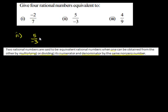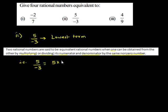So here we have 5 upon negative 3. This is in its lowest term, that is 5 upon negative 3 can be written as 5 multiplied by 1 upon negative 3 multiplied by 1. Therefore, equivalent numbers of 5 upon negative 3 can be obtained by increasing the value of the multiplicand.